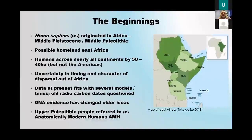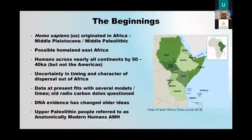Homo sapiens — us — pretty much agreed we originated in Africa during what is now the Middle Paleolithic, and the possible homeland is East Africa. By about 50,000 to 40,000 years ago, humans had spread across nearly all the continents, but not yet into the Americas. There's been quite a lot of uncertainty in the timing and character of the dispersal out of Africa. DNA has cast light on this. The old idea that we all came out of Africa once has actually been questioned.